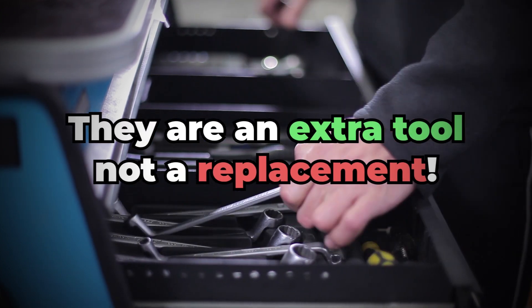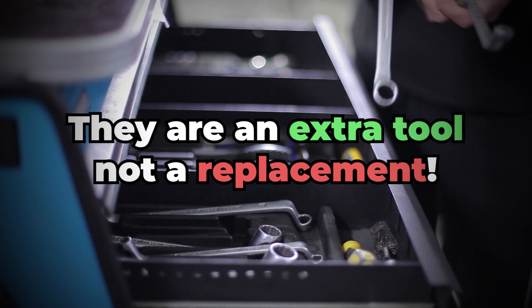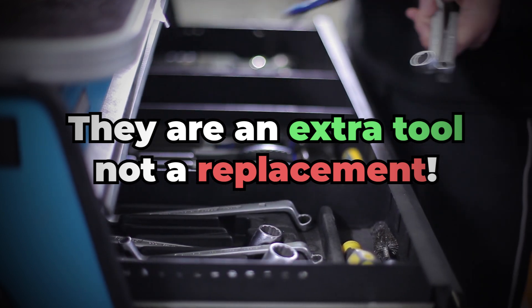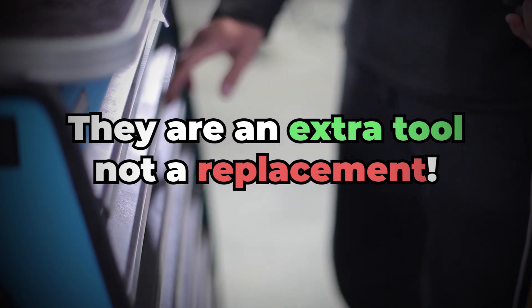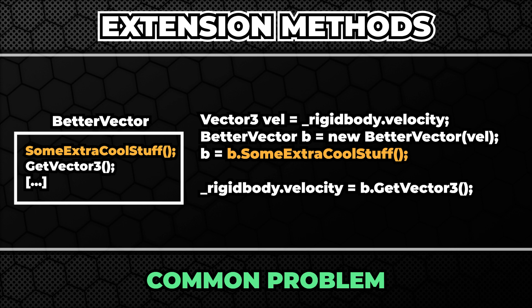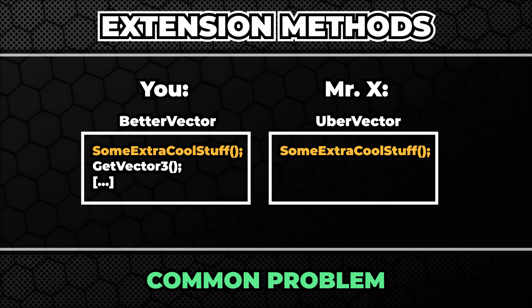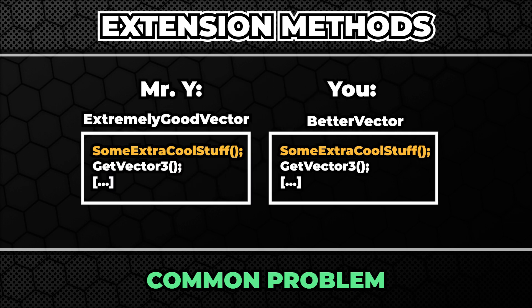Extension methods, like a lot of other features, are basically expanding your toolbox. They're not meant to replace other things like inheritance or make you resign from creating your own types. However, creating your own types may sometimes lead to an unnecessary increase of complexity. This becomes even more apparent when you work in a larger team. It's very common that you introduce a new type and then after a while you realize that somebody didn't use it and just duplicated your code. Or even worse, when you introduce a new type you didn't realize that the code already existed.